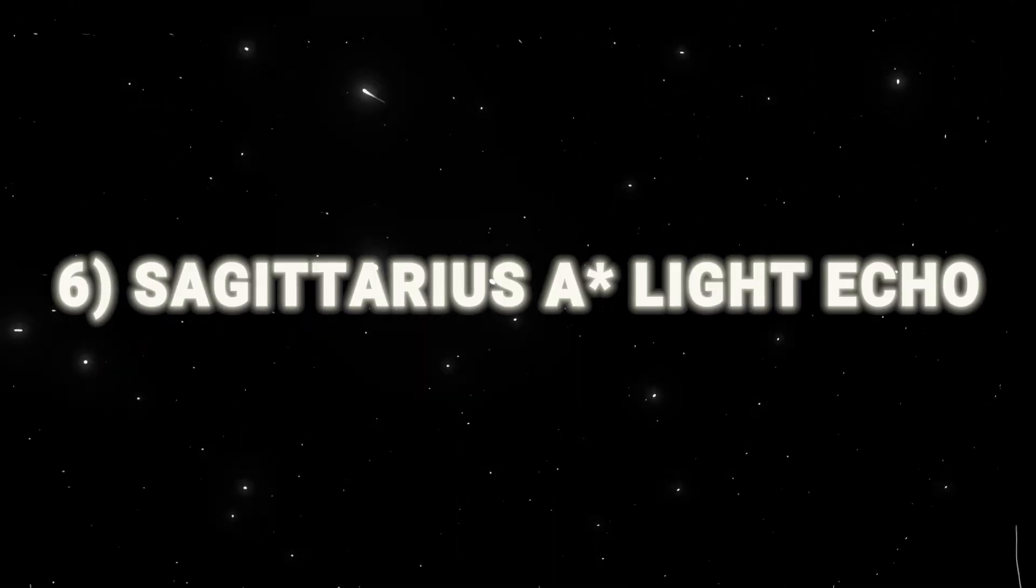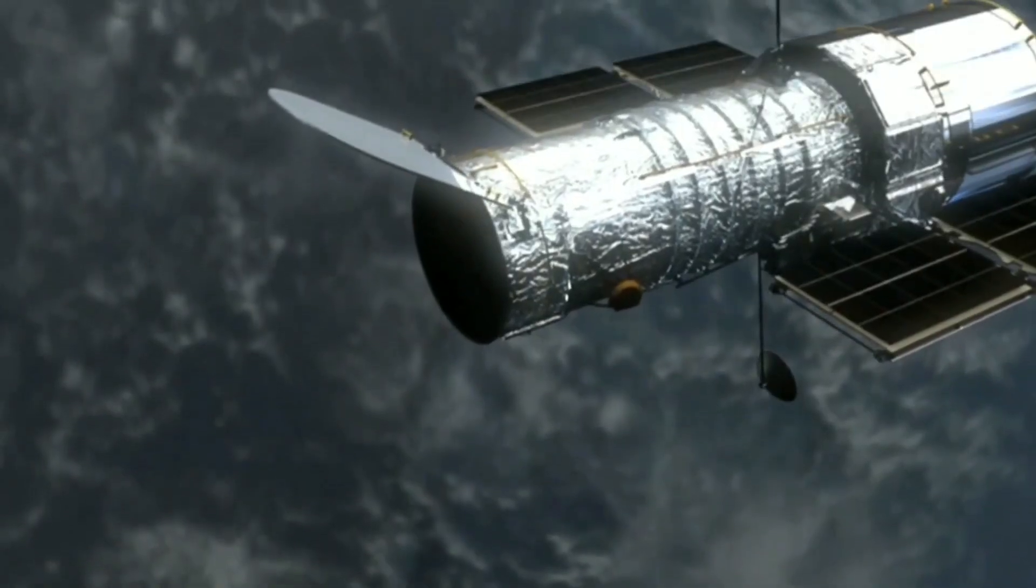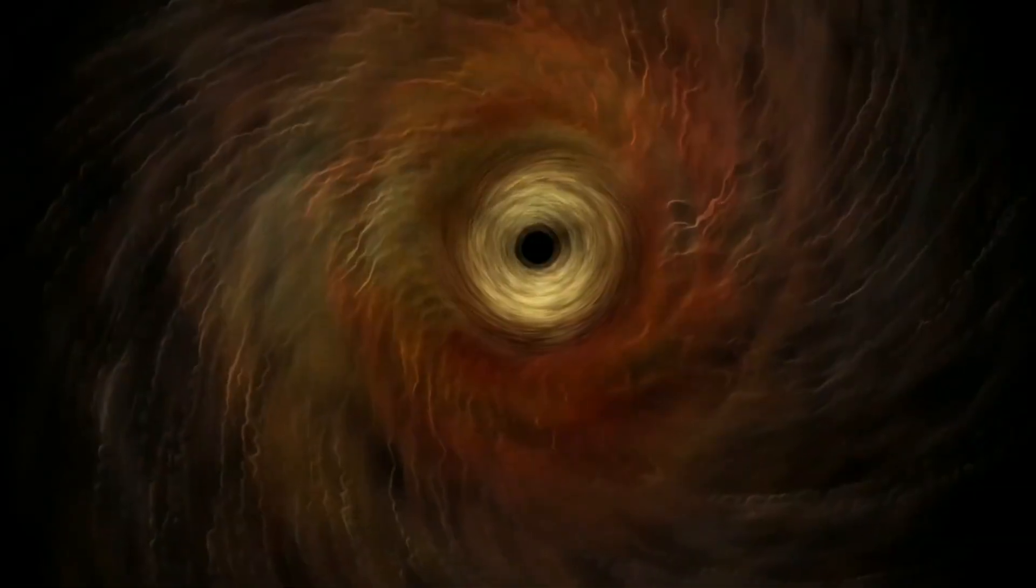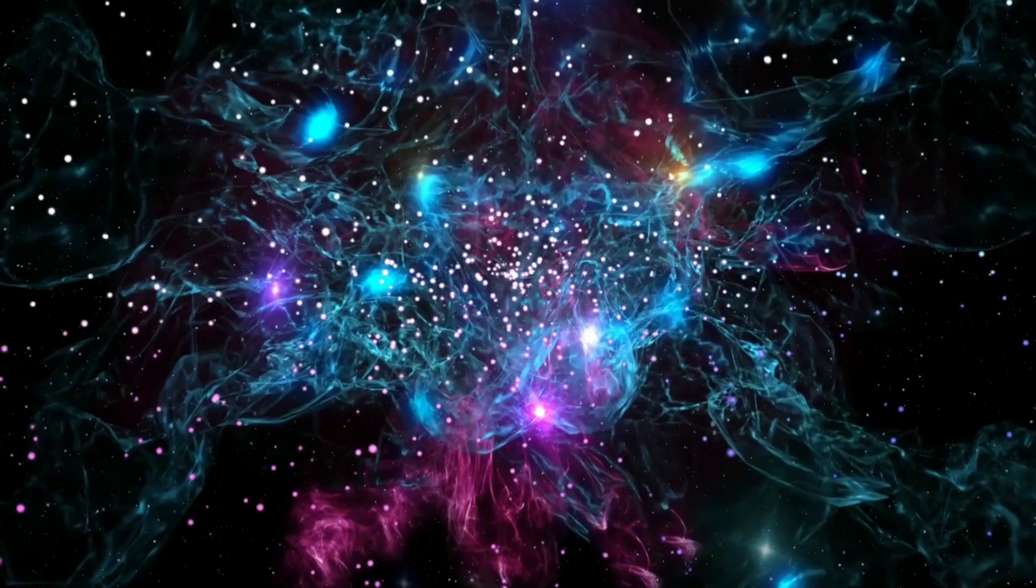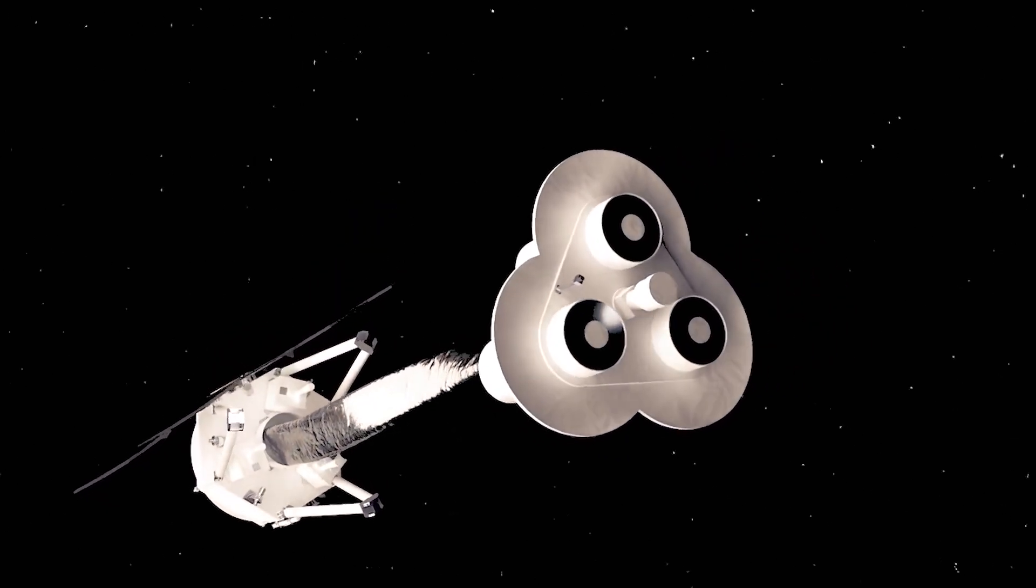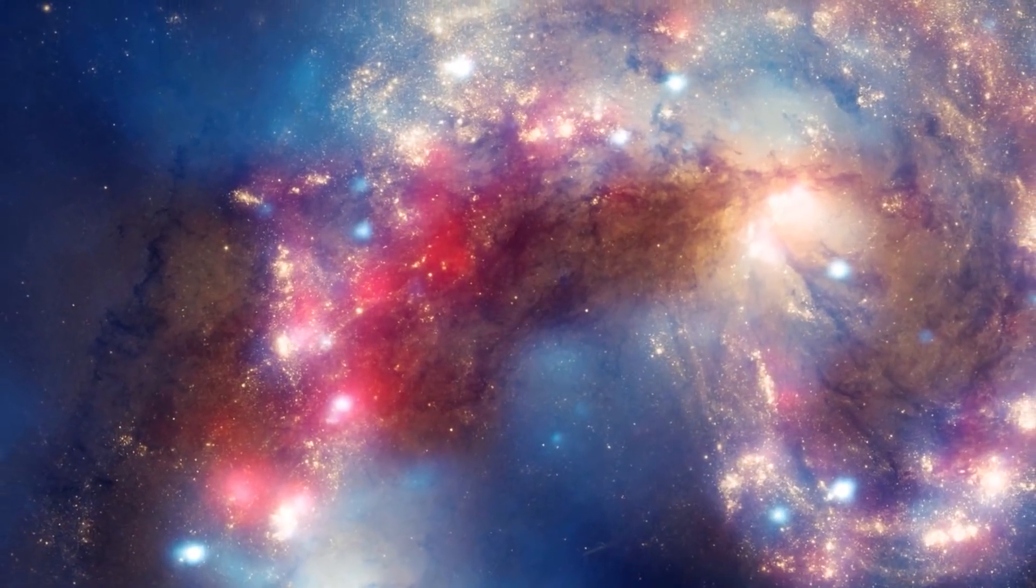6. Sagittarius A Light Echo. NASA transformed data near the Milky Way's supermassive black hole Sagittarius A into sound. This black hole nestled in the lower right of the image is surrounded by X-ray data from the IXPE Telescope, Red Orange, and Chandra Observatory, Purple.